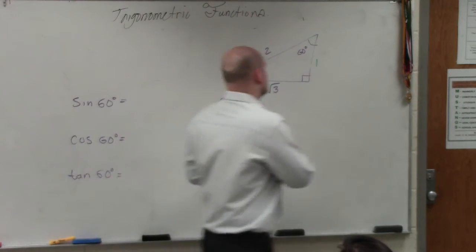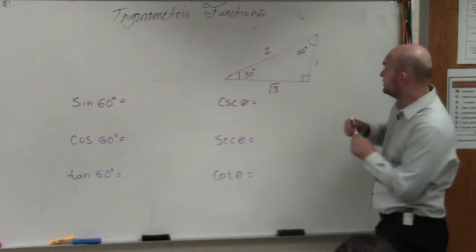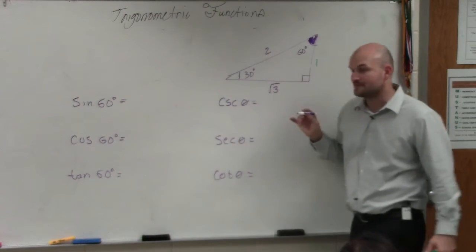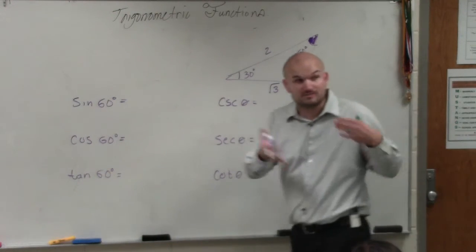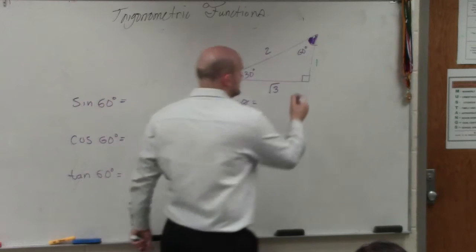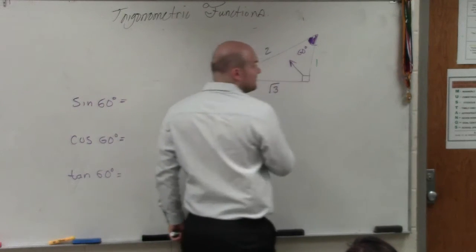So we've got to find our 60 degrees. 60 degrees is right here. This angle, 60 degrees. Remember, whenever we're doing our trig, especially sine, cosine, and tangent, the first thing I always like to do is identify my hypotenuse.